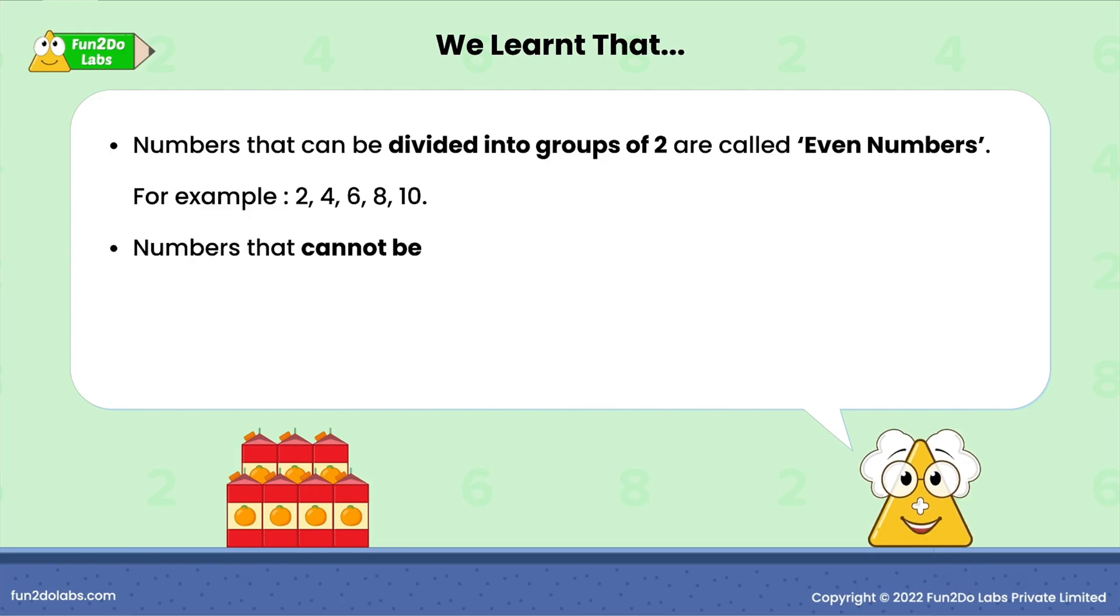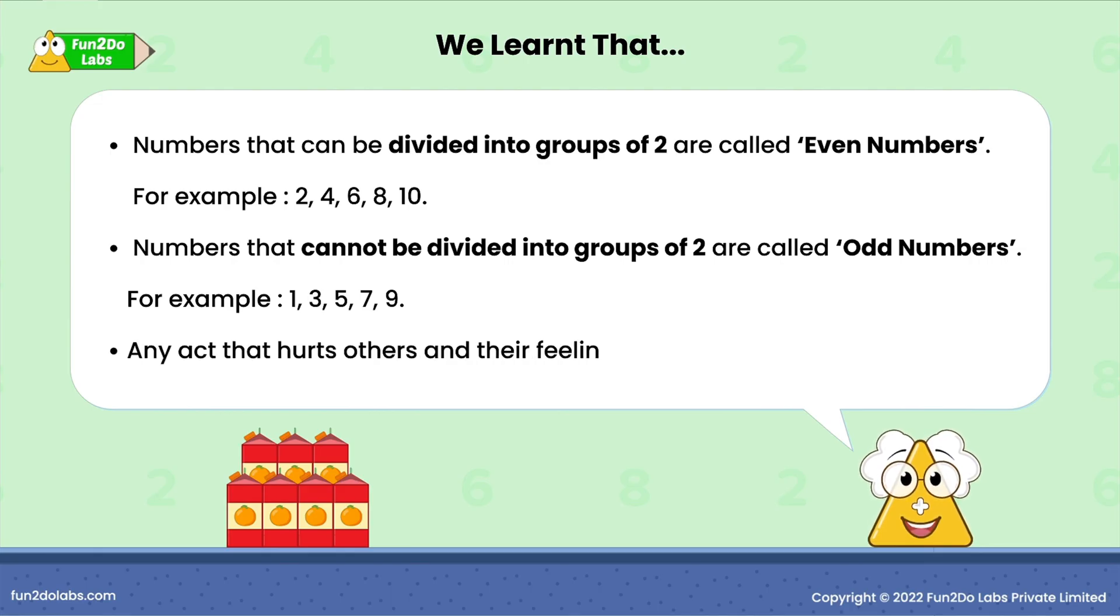Numbers that cannot be divided into groups of two are called odd numbers. For example, one, three, five, seven, nine. Any act that hurts others and their feelings is bad.